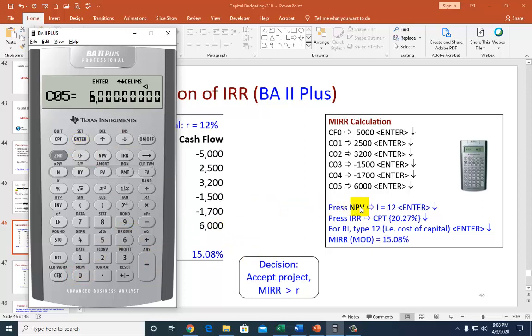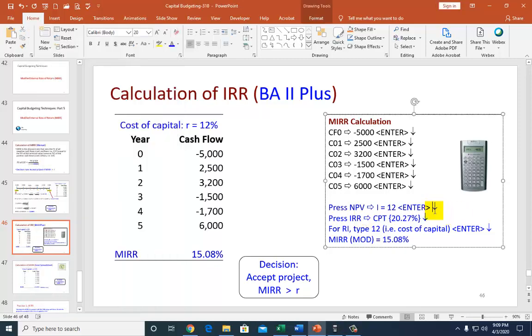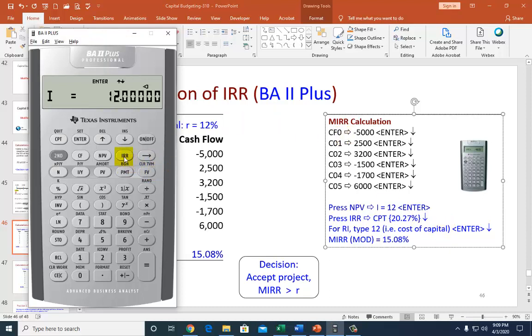So now watching this here, see what it says here? It says now press NPV. That's NPV. Press it. And for I, type in 12, which is the cost of capital right here. So 12, enter. And then scroll down if you want to. But otherwise, all you have to do is press this IRR. So we actually don't need this arrow scrolling down right there. So just go ahead and hit IRR right here. And then compute.